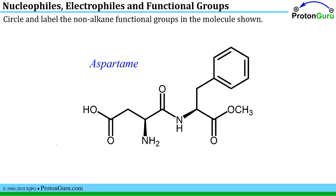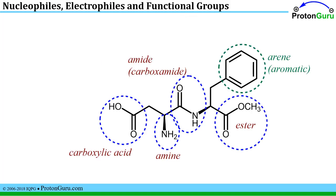Now let's do the same thing for aspartame, the molecule responsible for the sweet flavor of NutraSweet. If you identify all those groups, there are a couple additional carbonyl examples: C=O with an OH beside it is carboxylic acid; with an O and some R group, some CH3 or other non-hydrogen carbon-based group, that's called an ester. Another one is the amide we saw in the previous example, and in addition we have an amine and an arene.